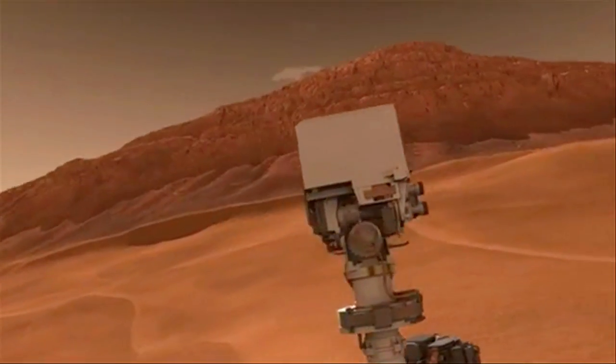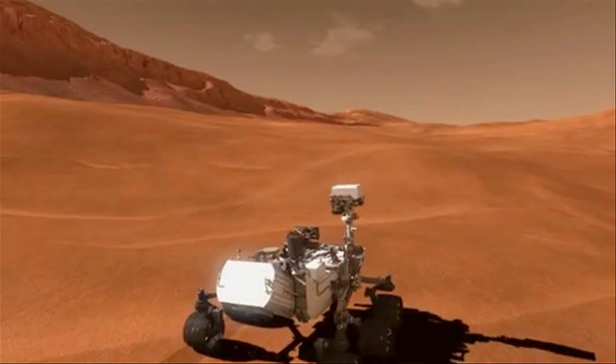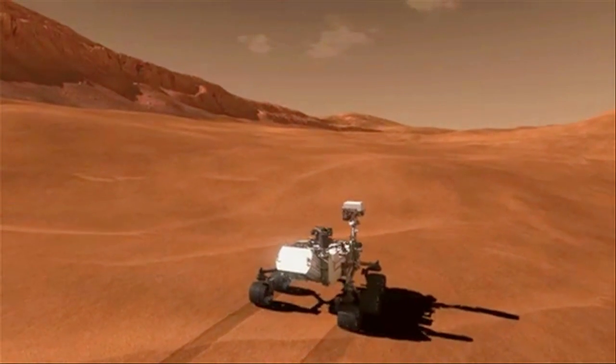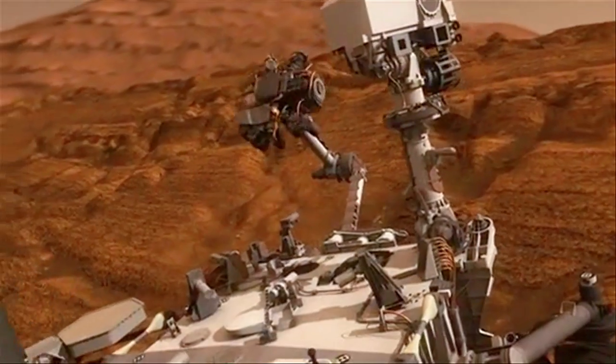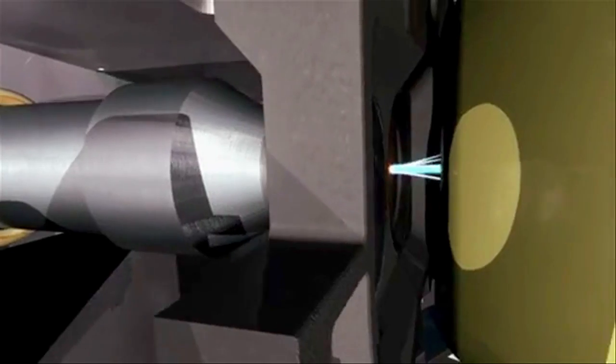Curiosity rolls across the surface of Mars collecting samples. Those samples are handed to SMS, which is where we take over. We move these samples from a collection point to one of three different science stations.